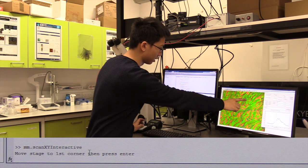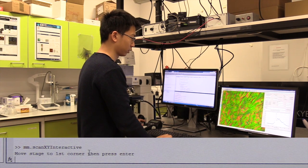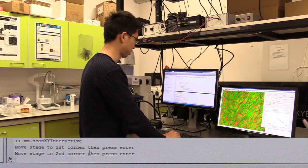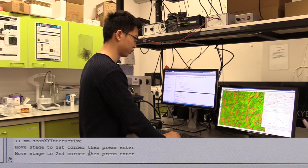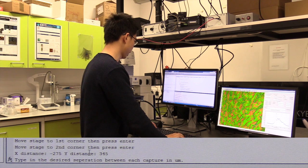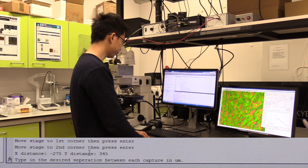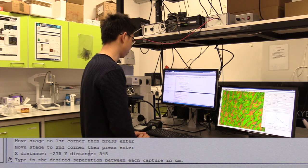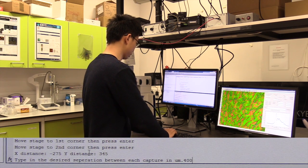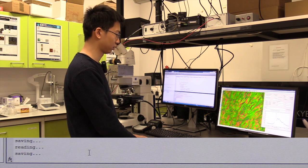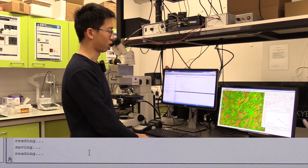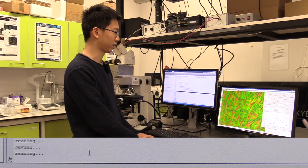What I will do is I will move to the first corner, press enter, and move to the second corner, press enter again, and type in the separations I want. I'd like to have, for example, 40. As you can see now, the stage will move to each point to be scanned.